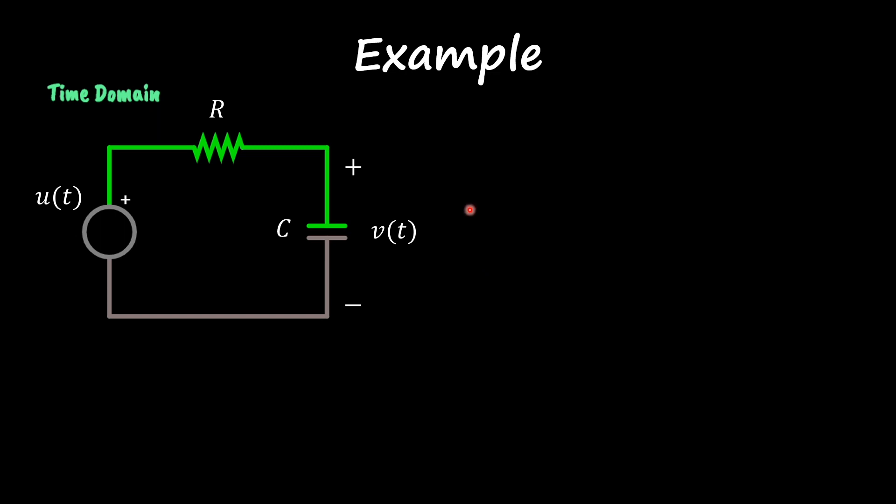In order to go over this, I'm going to use an example right away. We have here a simple resistor connected with a capacitor, and our power supply is a step function. I want to find the frequency domain representation, or the transformed circuit, of my time domain circuit.